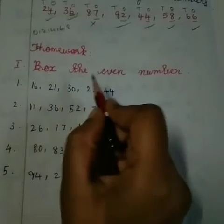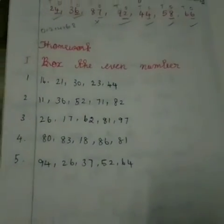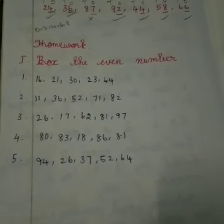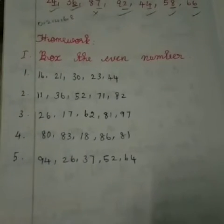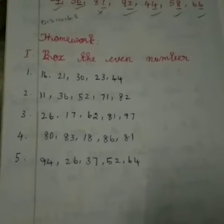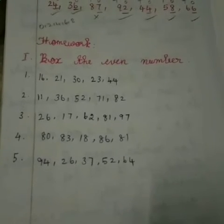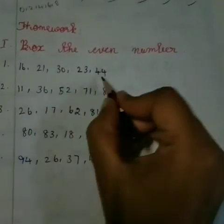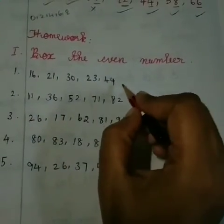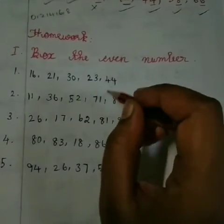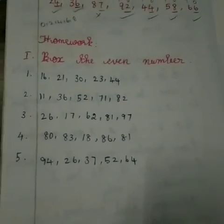First, find all the even numbers in the given question, then box the even numbers. In the first question, find how many even numbers are given, then box them. There are 3 even numbers in the first sum — box all the given even numbers. This is today's homework. Write the homework correctly and send it. Thank you.